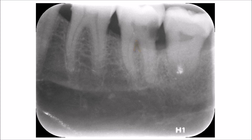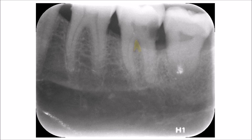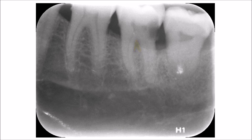If you look at the bifurcation of the lower six, you will see that you cannot detect a radiolucency there, which means that at the time this radiograph was taken, the bifurcation is still intact. We cannot tell whether in the coming days, weeks, or months — depending on the activity of the periodontal disease — this area will be affected or not.